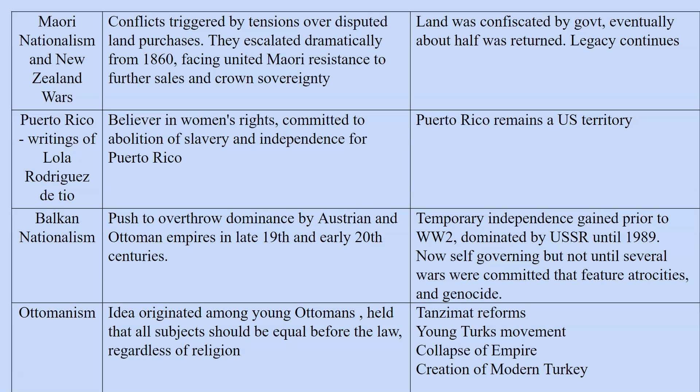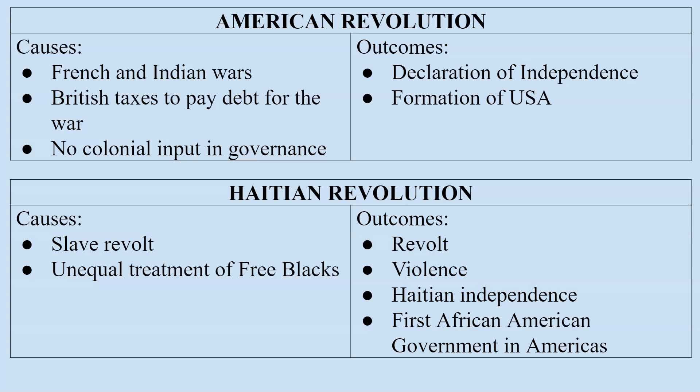Ottomanism was a nationalist movement that grew up in the Ottoman Empire. The idea was that everybody was a citizen of the Ottoman Empire and therefore should be equal before the law regardless of religion — breaking down barriers separating Muslims from Christians, Jews, and others. This led to the Tanzimat reforms. By the end of the 19th century, the Young Turk movement rose pushing for more Ottoman Turkish control, eventually leading to the collapse of the empire after World War I and the creation of modern Turkey under Mustafa Kemal Atatürk.